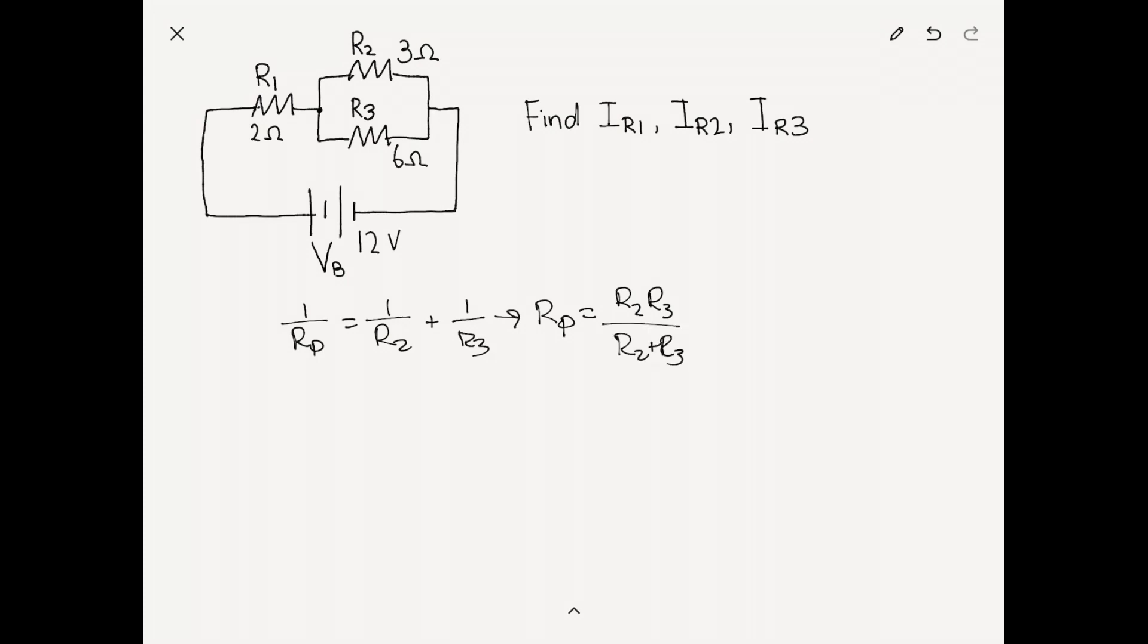If we plug in the values for the resistances, we get that Rp equals 2 ohms. In other words, the equivalent resistance of R2 and R3 here is equal to 2 ohms.